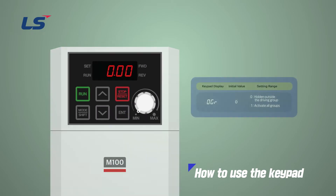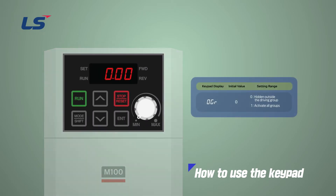the M100 inverter has all groups hidden except for the operation group to prevent erroneous input when shipped from the factory. So, even if you press the Mode Shift key, you cannot move between groups.